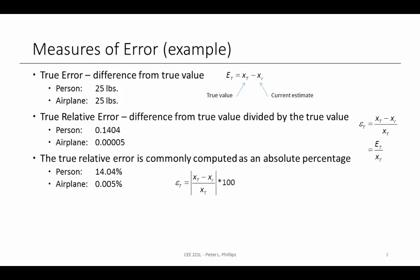So measurements of error, we have true error, which is the difference between a true value we'll call XT and the current estimate XR. So for the example given above, the true error is 25 pounds for both the person and the airplane.